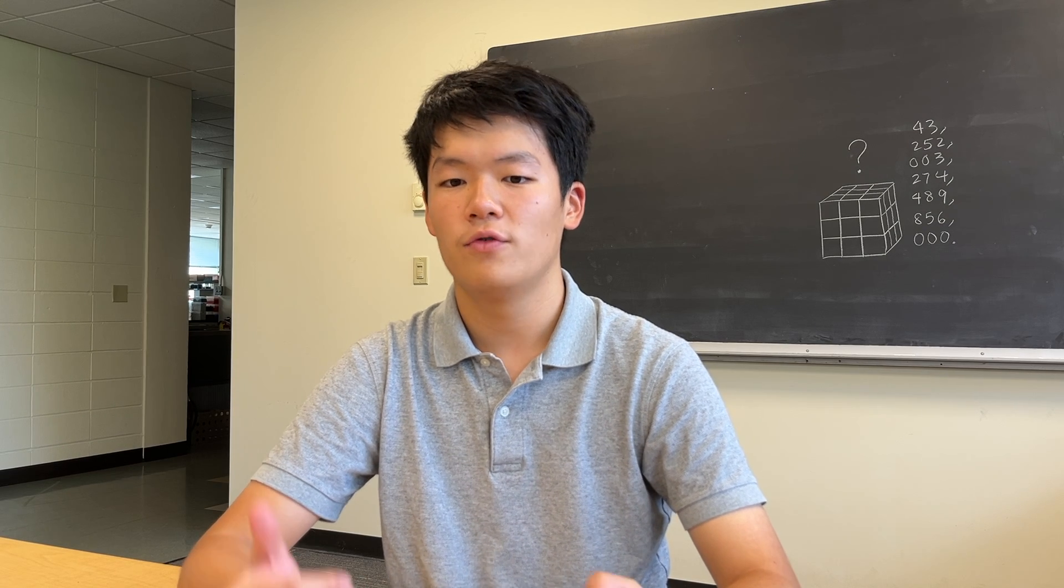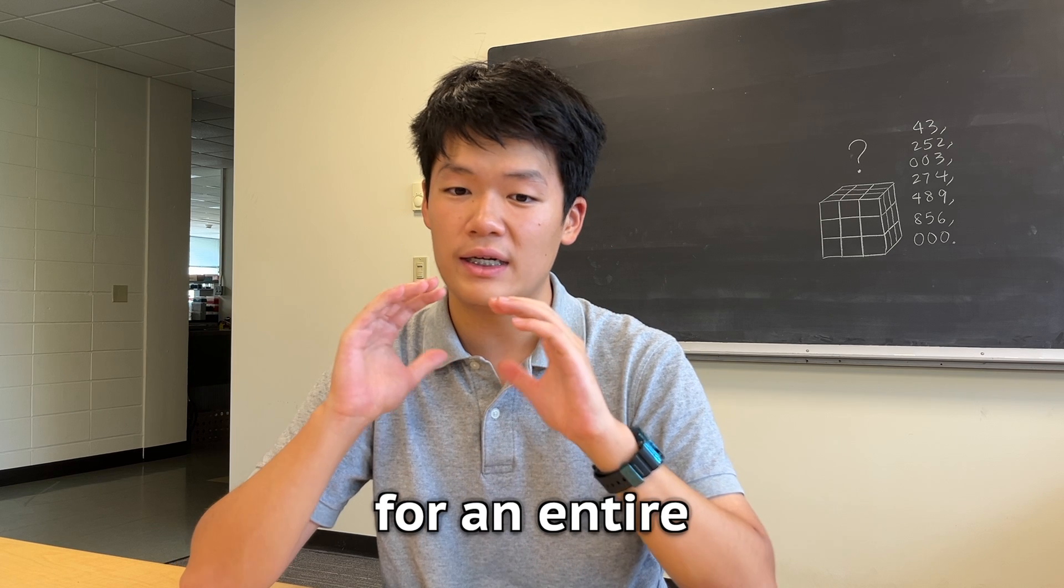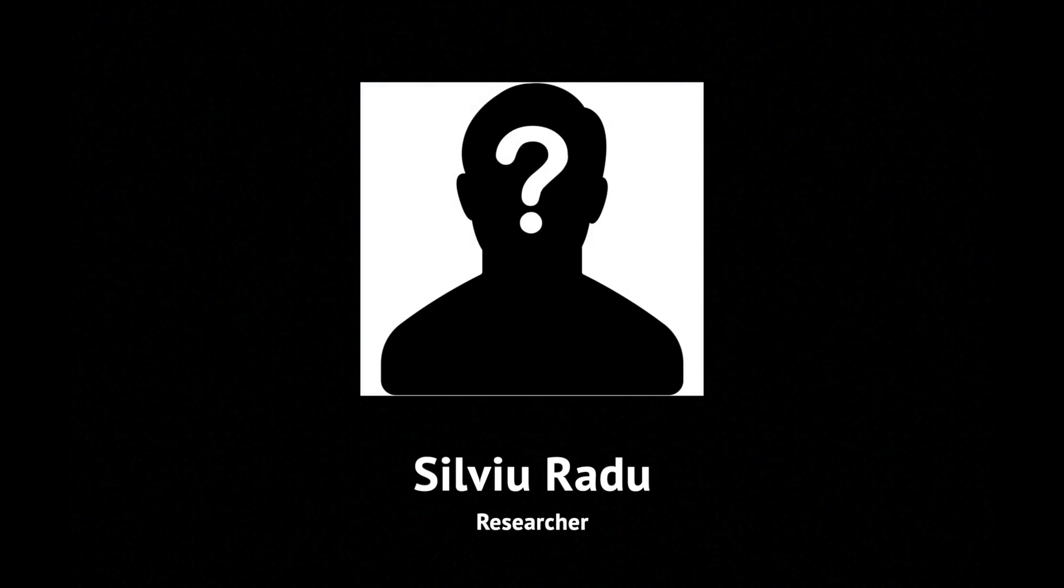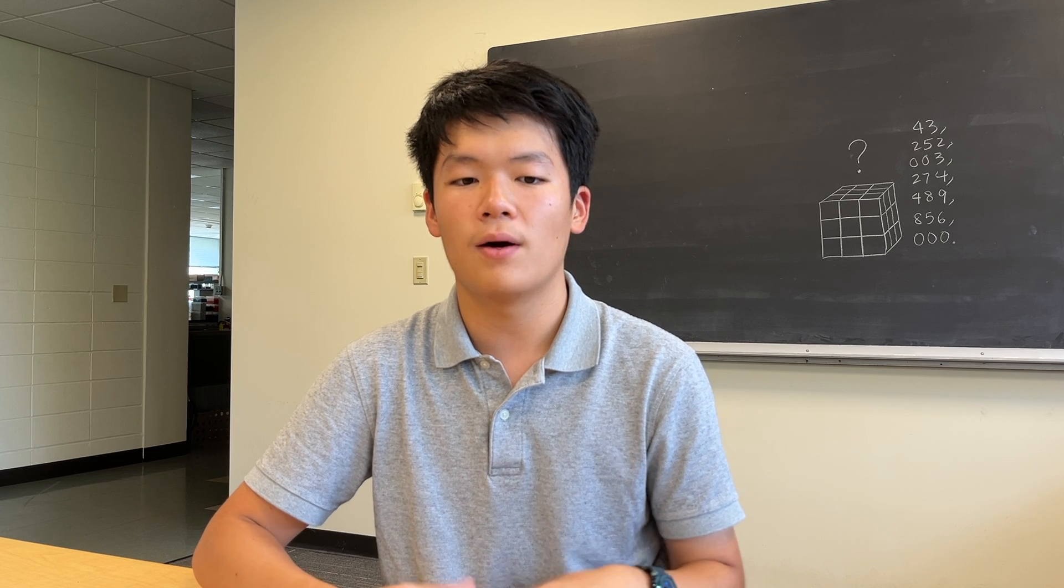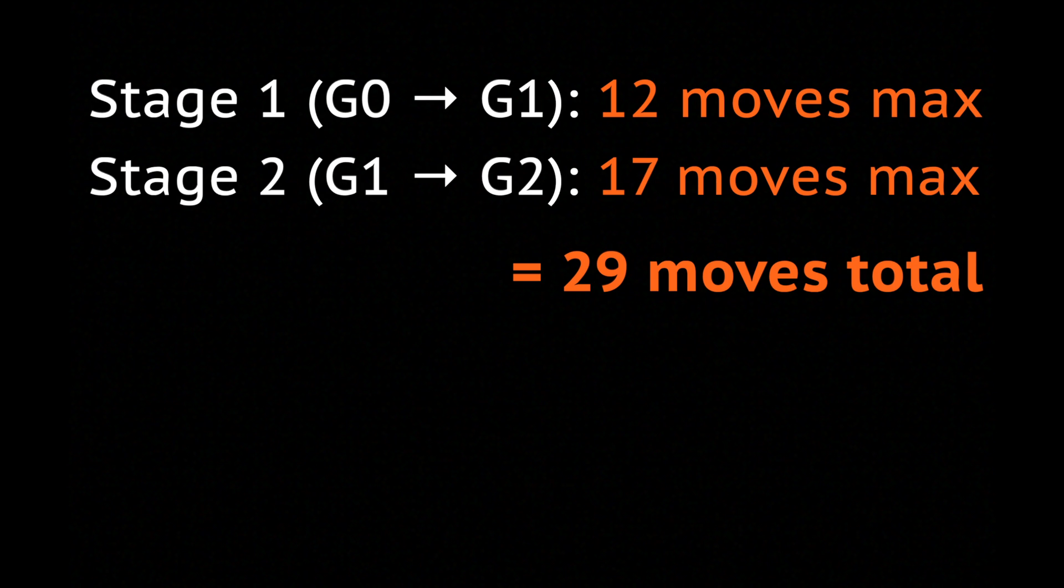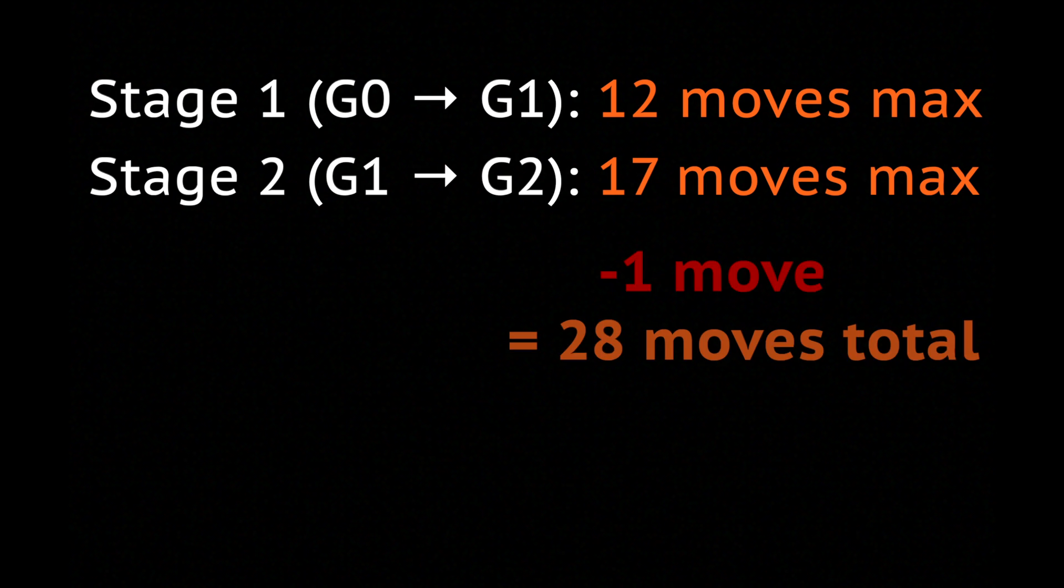Michael Reid's 29 moves upper bound was undisturbed for an entire decade before researcher Silviu Radu managed to lower it in 2005. Building upon Reid's argument, Radu proved that all positions of distance 29 can be avoided using set theory, and the upper bound was further reduced to 28.